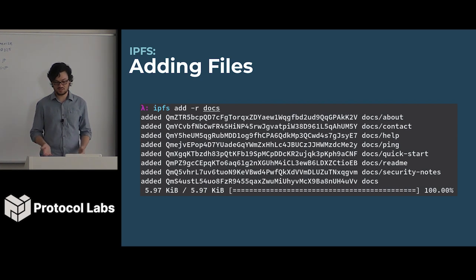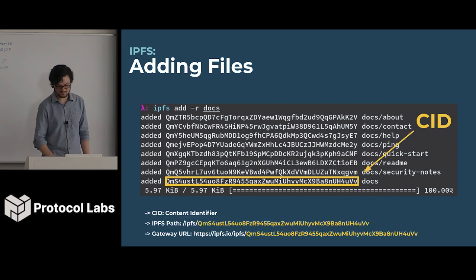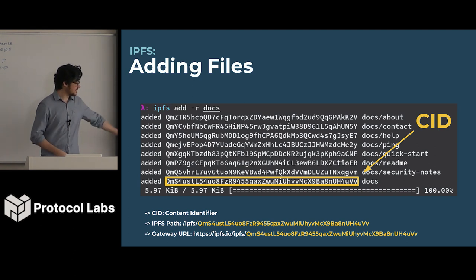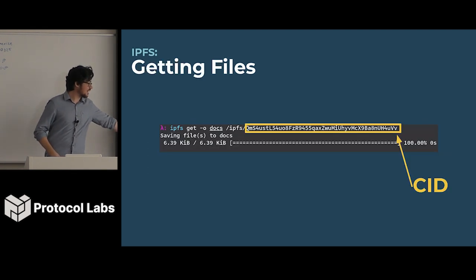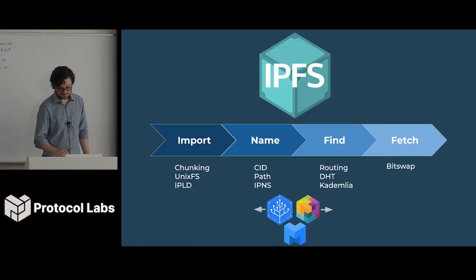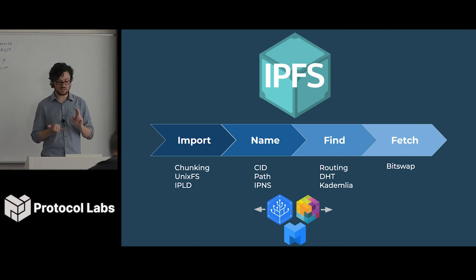If you've ever used IPFS, you've probably seen this screen. This is how you add files to IPFS — you just run this command. At the very end you see this thing called a CID, a content ID that points to a file. You've probably seen it in a path like this, in a gateway URL. You can then get files by running the get command. This talk is going to cover how we import files, name files, find files, and then fetch files in the network.